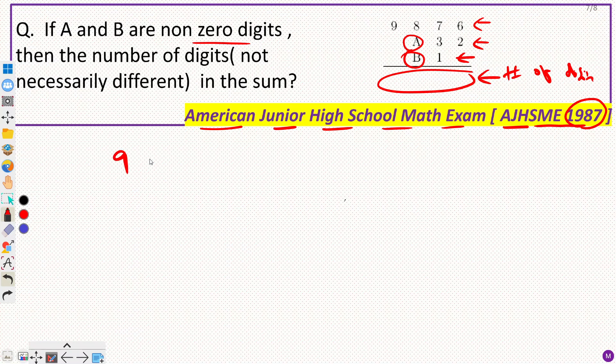So we have 9876A32 and B1. Now here you can do a mistake. B1 is written here. But can I leave this place empty? No, you can't add like that, right?